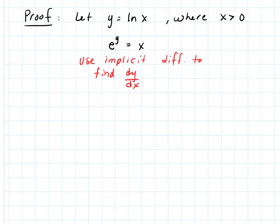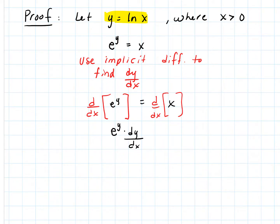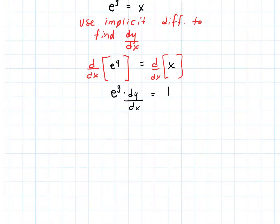So e to the y equals x. Now let's use implicit differentiation to find dy/dx. We take d/dx of both sides. For e to the y, we get e to the y times dy/dx using the chain rule, because y is a function of x. The derivative of x is just 1. So dy/dx equals 1 over e to the y. But e to the y is simply x, so this is simply 1 over x.